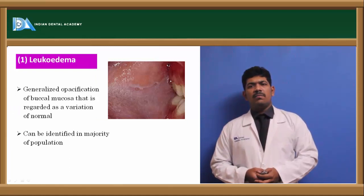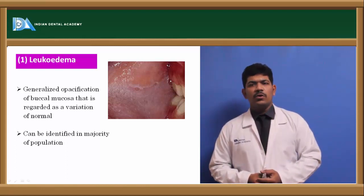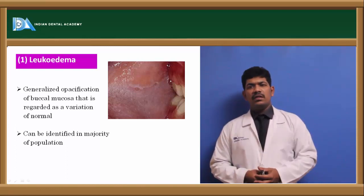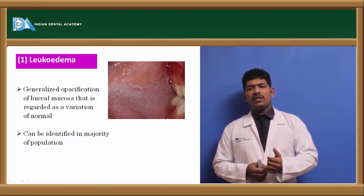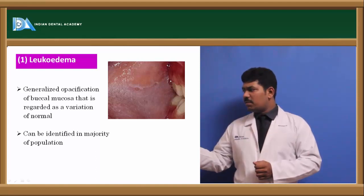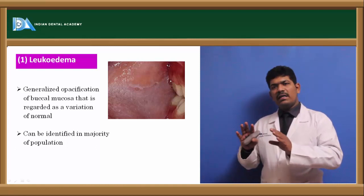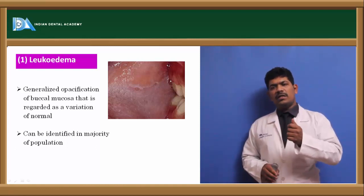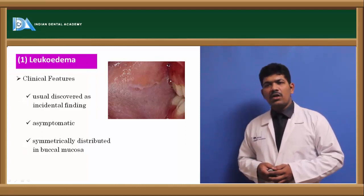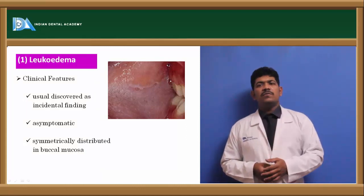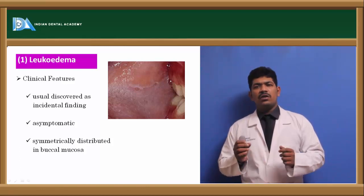In the past, leukoedema has been called pre-leukoplakia, whereas nowadays that terminology is no longer used. In this particular lesion, there is a totally harmless whitish appearance on the oral mucosa which disappears on blanching. As you can see in this image of the buccal mucosa, there is a whitish corrugated or wrinkled appearance. On stretching of the buccal mucosa, this whitish appearance disappears. This is called leukoedema. The exact etiology is unknown. It is totally asymptomatic and sometimes found symmetrically on both sides of the buccal mucosa, and both sides would disappear on blanching or stretching.